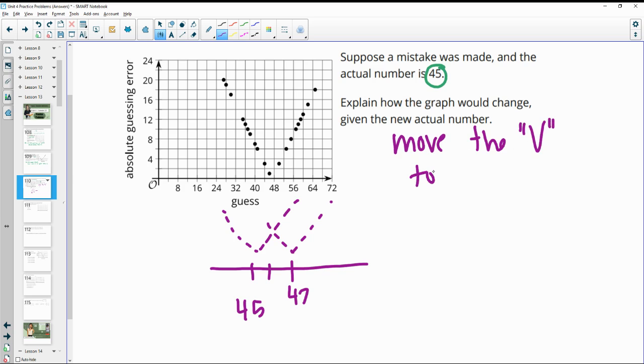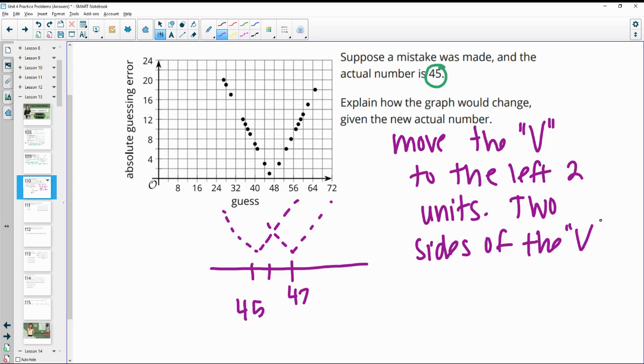And the graph is still going to be a V, so it's going to move the V to the left two units. And the two sides of the V will meet at that actual number, right? So they'll meet at 45, 0, because if somebody guessed 45, that has an error of 0.